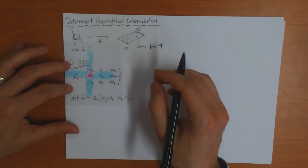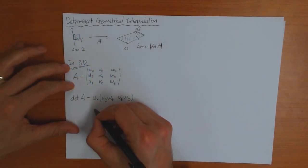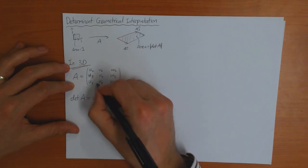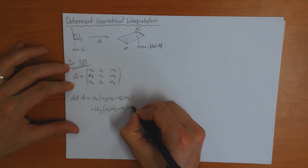And then this one, but this one has a minus from the chessboard. So this is minus UY times the determinant of this, which is VXWZ minus VZWX.